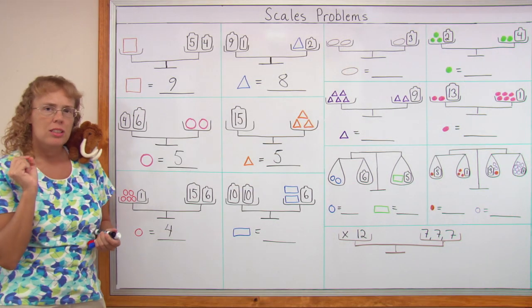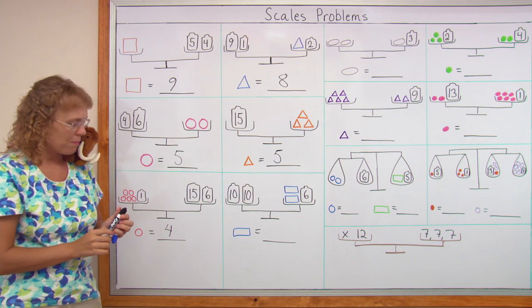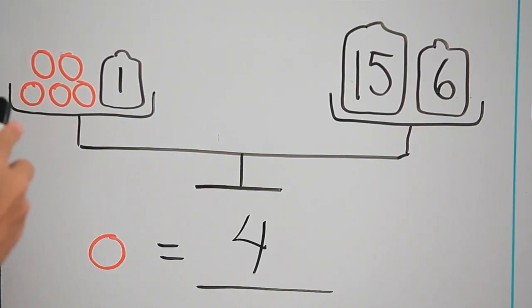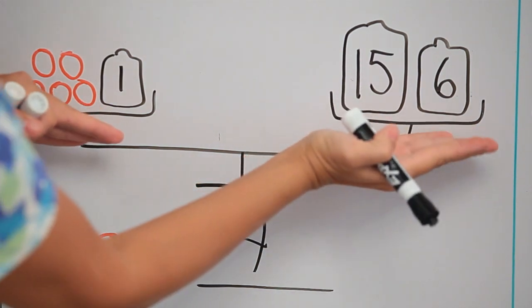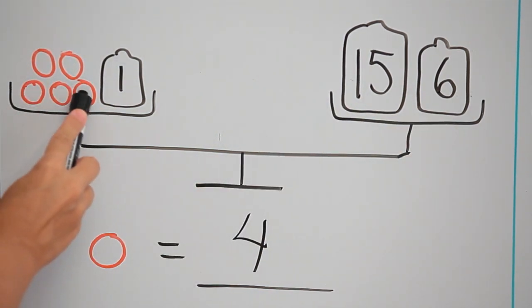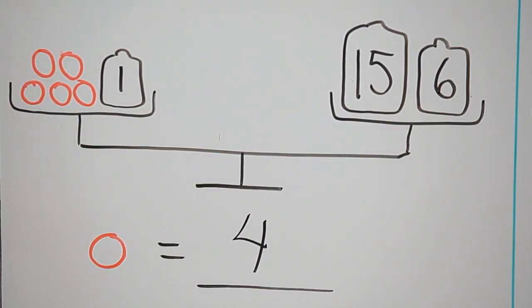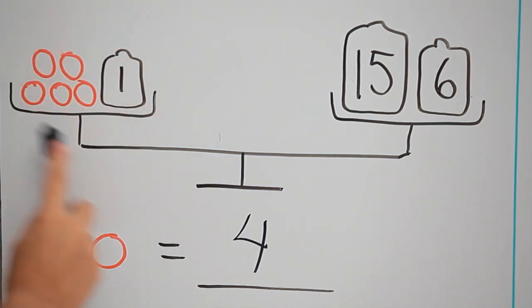And this time let's check the equation. By checking I mean that, okay, if this is 4, I'm going to check if these 2 weights are actually equal. 4, 4, 4, 4, 4. That's 5 times 4. 20. Plus 1. 21. 21. Yes, it checks.